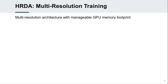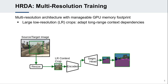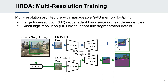To effectively combine the strengths of these two approaches, we propose HRDA, a novel multi-resolution framework for UDA semantic segmentation. First, HRDA uses a large low-resolution context crop to learn long-range context dependencies. Second, HRDA uses a small high-resolution detail crop from the region within the context crop to adapt small objects and to preserve segmentation details.